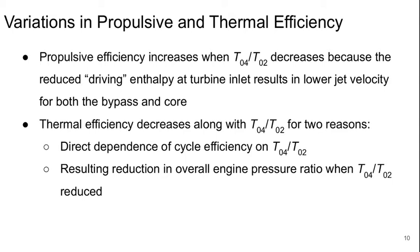The answers are as follows. For the propulsive efficiency, this increases when the T0.4 over T0.2 value decreases because there's essentially reduced driving enthalpy at the turbine inlet, and this reduces the jet velocities for both the bypass and the core, which of course increases propulsive efficiency.